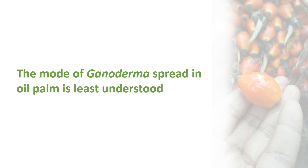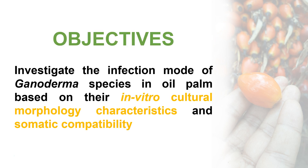The mode of Ganoderma spread in oil palm is also least understood. It is known that Ganoderma infection is initiated at the root of an oil palm and can spread to neighboring healthy palms through root-to-root contact. However, root-to-root infection is considered uncommon since Ganoderma species in oil palm plantations are genetically heterogeneous and basidiospores may play an important role. The objectives of this study were to investigate the infection mode of Ganoderma species based on in vitro cultural morphology characteristics and somatic compatibility.